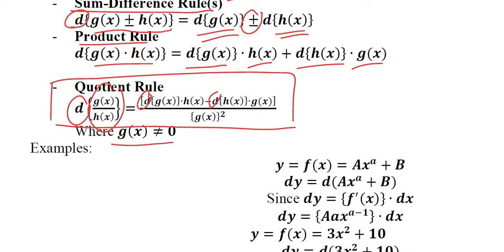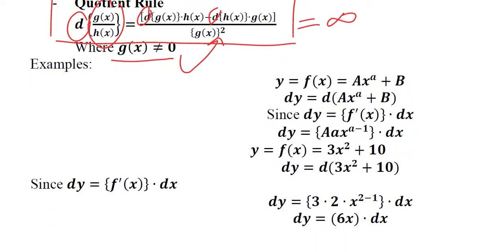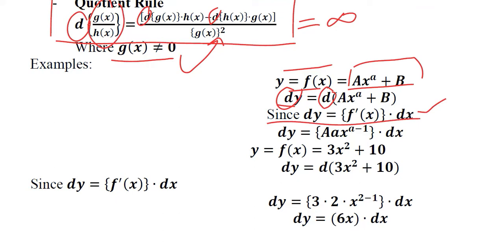There is a stipulation that g of x cannot be zero, because if it is zero, the whole function will become undefined. Here we have an example to solve. This is a function in terms of x, where x is the power of a. If we take the differential of it, both sides will introduce d, and then we put the values into the formula we just developed. The derivative of this function is known, so the derivative is substituted in place of it, and this is the differential of the given function.